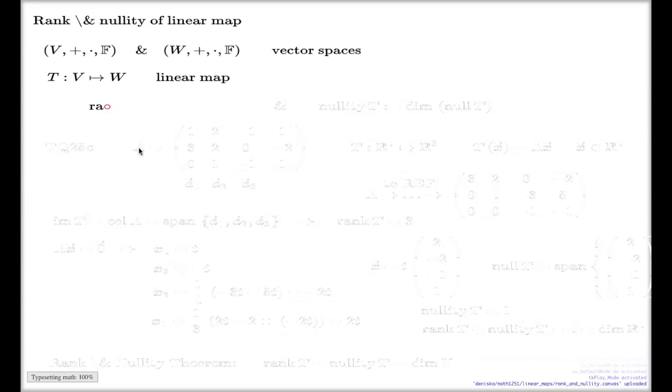Rank in that case is simply the dimension of the image space. So we know what the image space of a linear map is. If you measure the dimension of that space, that is the number you will come up with.